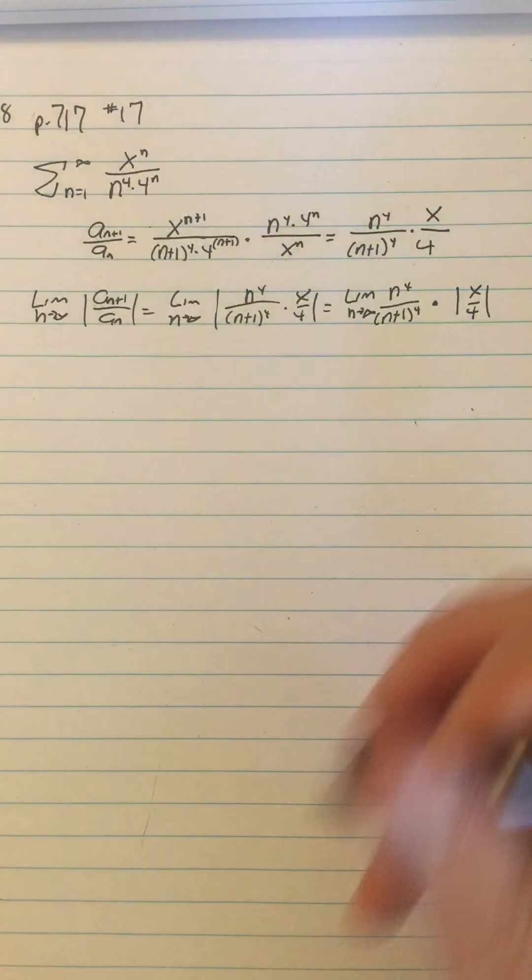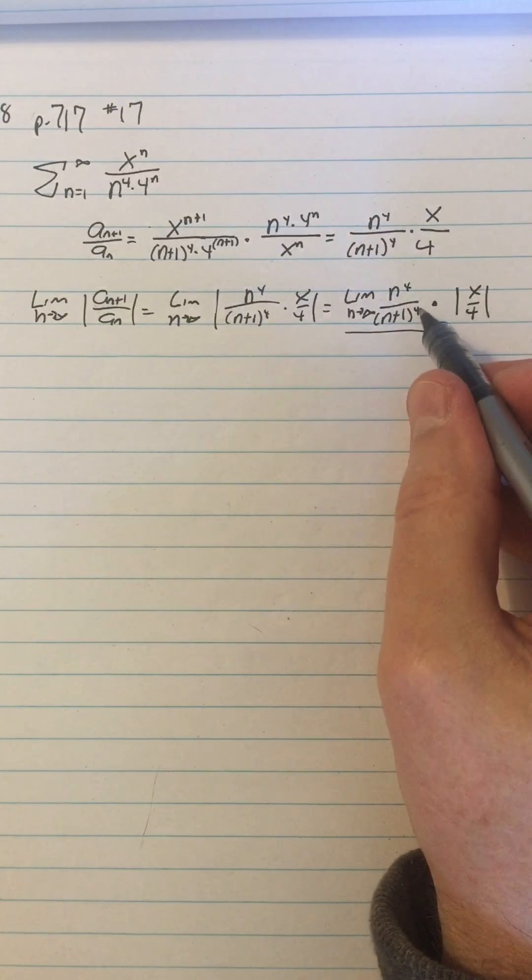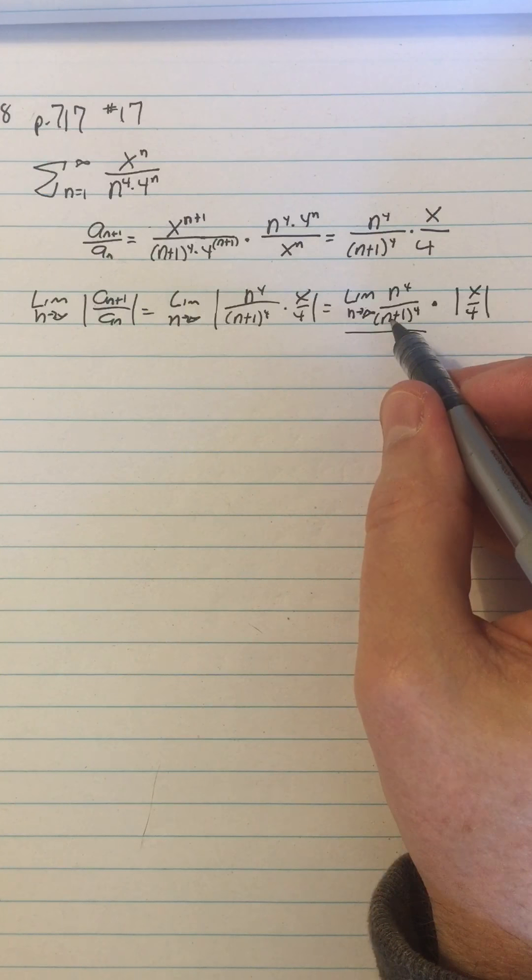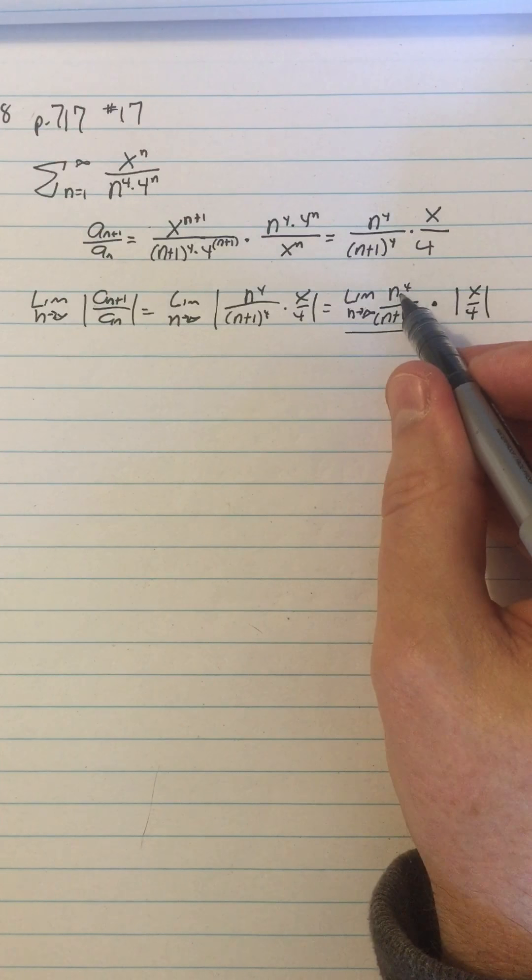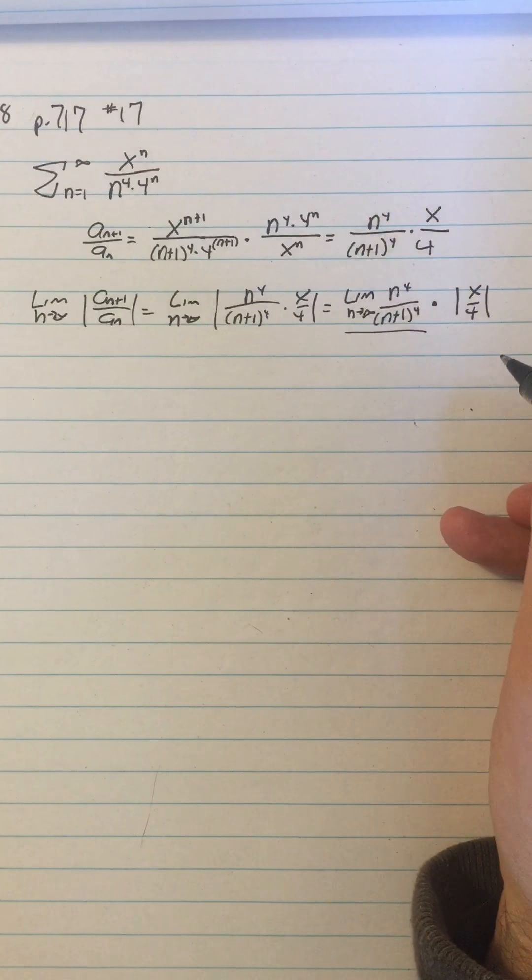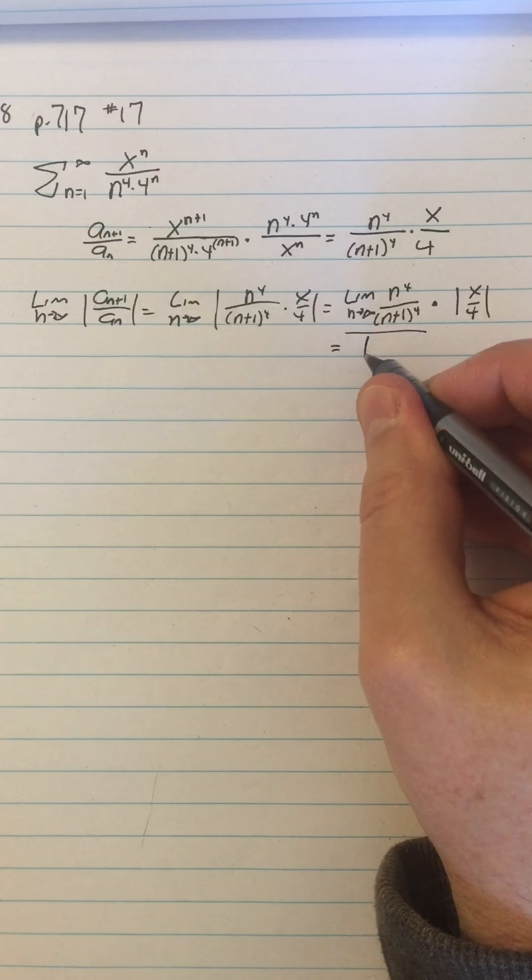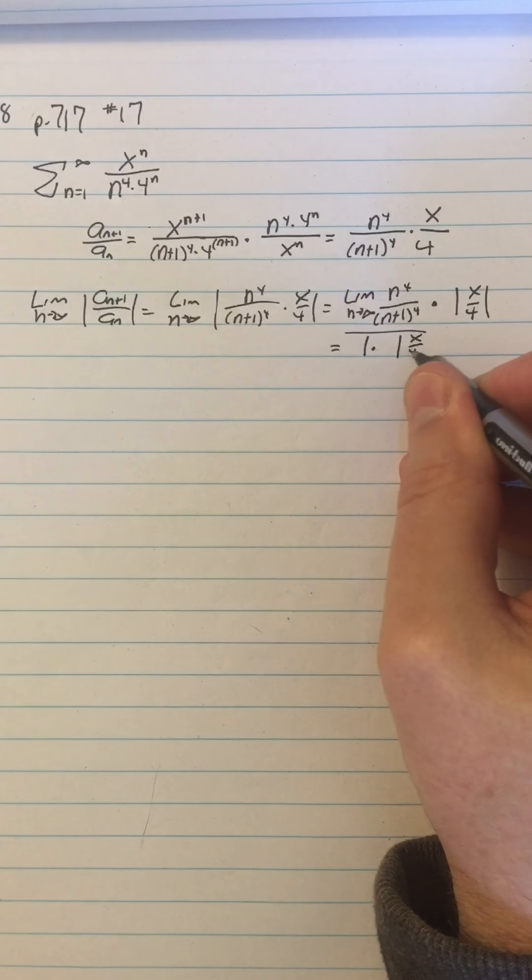So that's what that is. And then I can observe that this limit, since the degree of the denominator is 4 and the degree of the numerator is 4 and the leading coefficients top and bottom are both 1, that equals 1. So this equals 1 times absolute value x over 4.